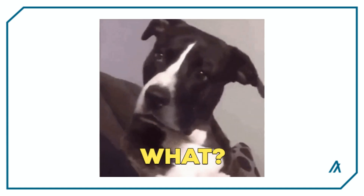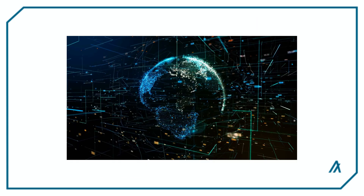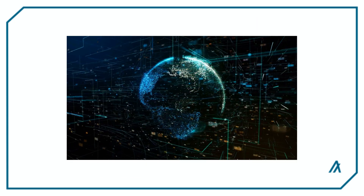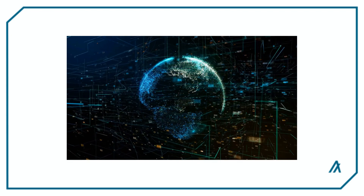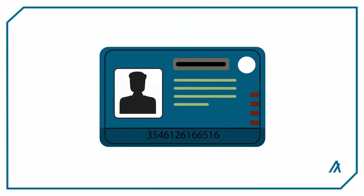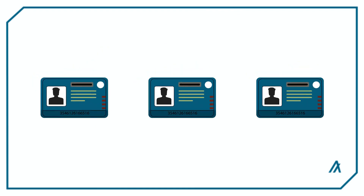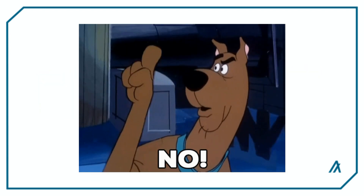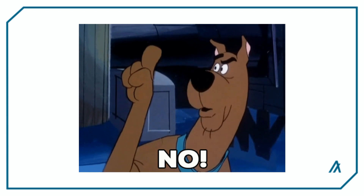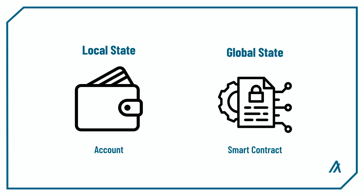For those who don't know what global and local states are: global state is state recorded on the smart contract that is accessible by everyone. On the other hand, local state is a state recorded on accounts and each account can have its unique local state. Think of it as personalized information recorded for your account. Now this doesn't mean the local states are private — local states are still accessible by everyone. The only difference with global state is that local states are recorded on the account and not on the smart contract.